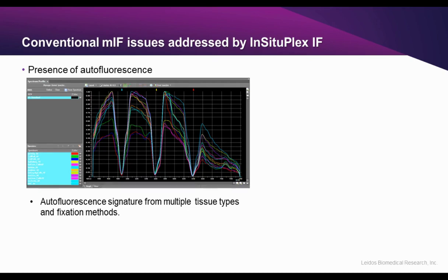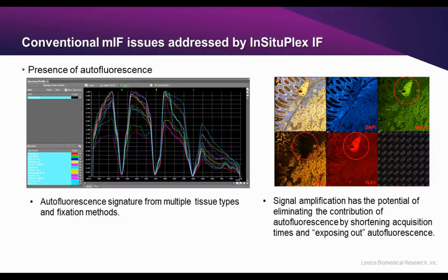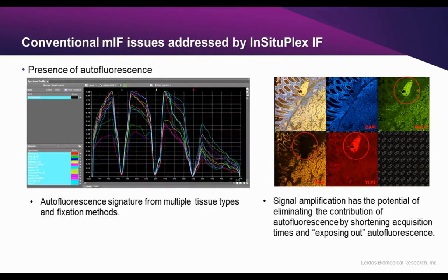This is a plot of autofluorescence from multiple tissues, with multiple fixatives and storage ages from source blocks. While the trend is the same — starting high in the 400 nanometer range and diminishing towards 800 nanometers — the amplitude varies greatly. A well-thought-out amplification strategy can mitigate some of this by exposing out the autofluorescence. Here, the beta-catenin in orange is amplified and the other fluorophores were detected without amplification. Since the capture was quick enough in the beta-catenin channel, the underlying red blood cells' autofluorescence was not captured and would not pose an issue during analysis.